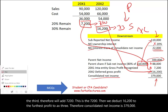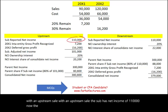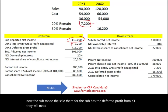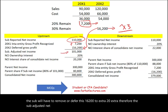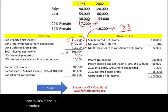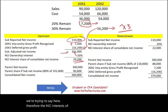For an upstream sale, the subsidiary made the intercompany sales, so the subsidiary carries the deferred profit. The subsidiary's net income of $110,000 is adjusted: add back the $7,200 realized from X1, then deduct the $16,200 deferred to X3, giving an adjusted net income of $101,000. The NCI is now 20% of $101,000, which is $20,200. Notice that in an upstream sale, the NCI absorbs its share of the profit deferral — that is the key distinction.